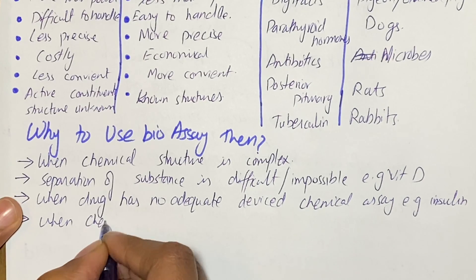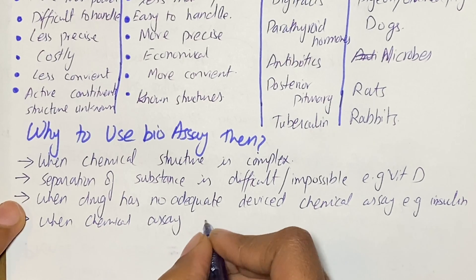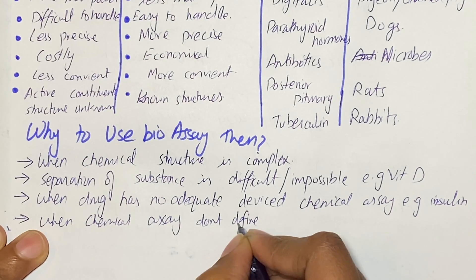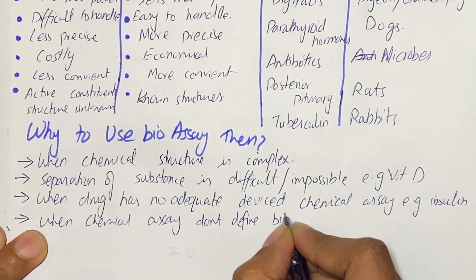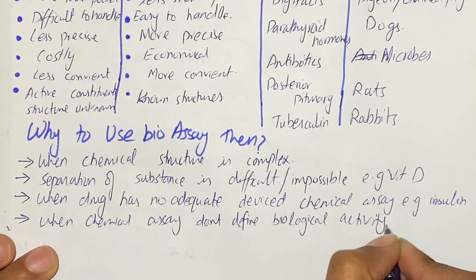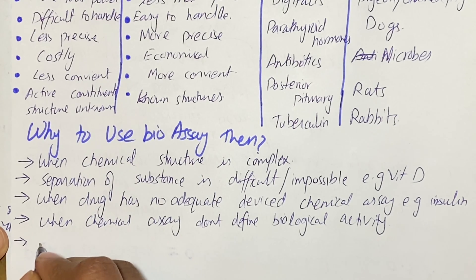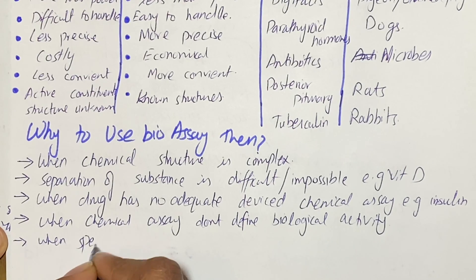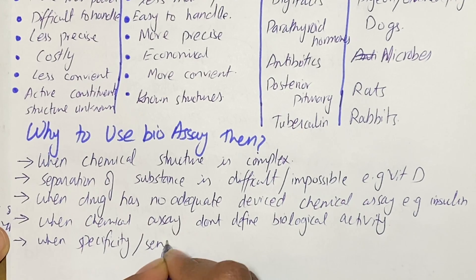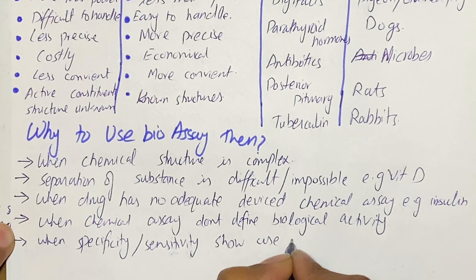Another reason is when chemical assay does not define biological activity. If you want to determine the biological activity of a substance but the chemical assay does not tell us the biological activity, we then do bio assay to determine it. Also, when specific sensitivity favors the use of bio assay — since bio assays have more sensitivity than chemical assay — we often use bio assay in certain conditions.